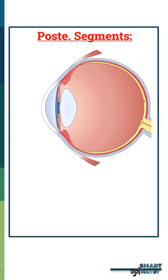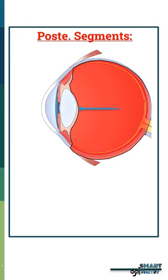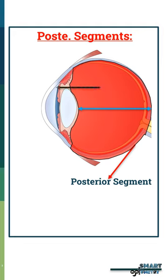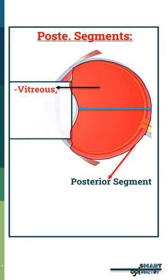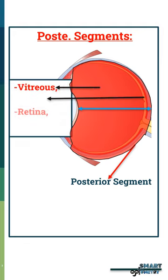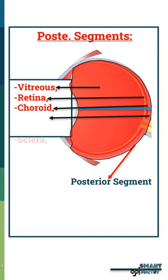The posterior segment extends from the anterior vitreous to the posterior sclera. The posterior segment includes the vitreous, retina, choroid, sclera, and optic disc.